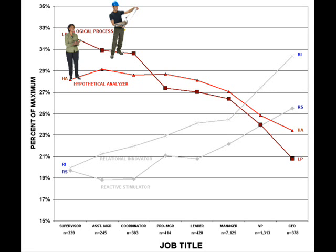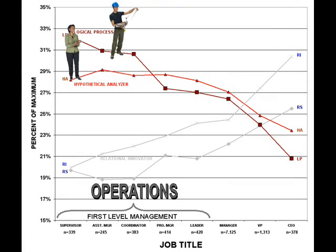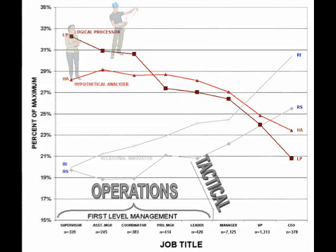Whether these two strategies actually work in practice depends on the job being done, and that job changes by organizational level. The focus of first-level management is operations. Detail is available, facts are on hand, and relationships are clear. Predictability is high, and the commitment to the structured input styles of LP and HA make a lot of sense. They work.